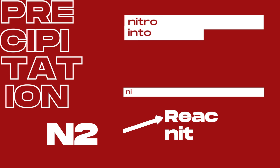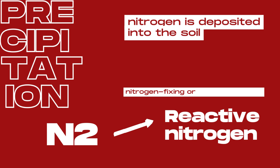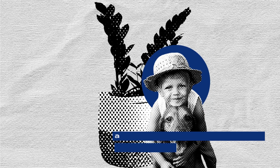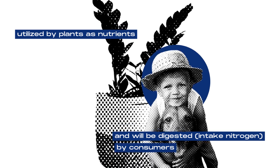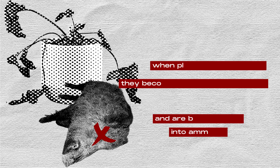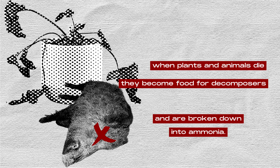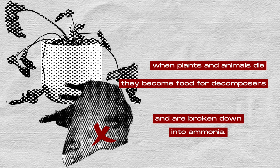Through precipitation, atmospheric nitrogen is deposited into the soil, where nitrogen-fixing organisms convert dinitrogen into reactive nitrogen. This will be utilized by plants as nutrients and will then be digested by consumers within the ecosystem as part of the food web. When plants and animals die or excrete dung, they become food for decomposers and are broken down into ammonia by these same organisms.